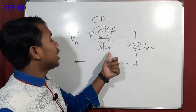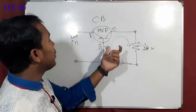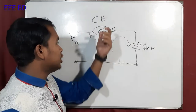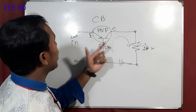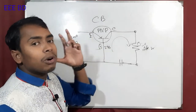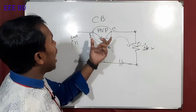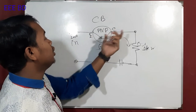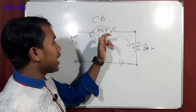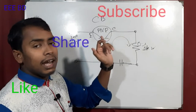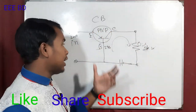The transistor in Common Base Configuration: in Common Collector Configuration, the emitter current is 100%, and then we can give the current in our collector at 98% flow. Therefore, the current is possible, and we can get the transistor.